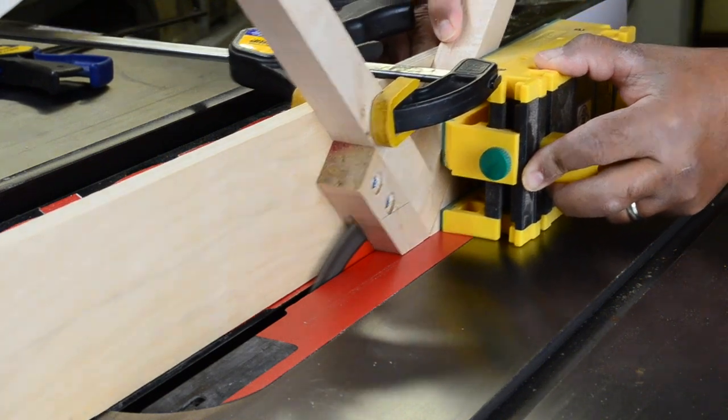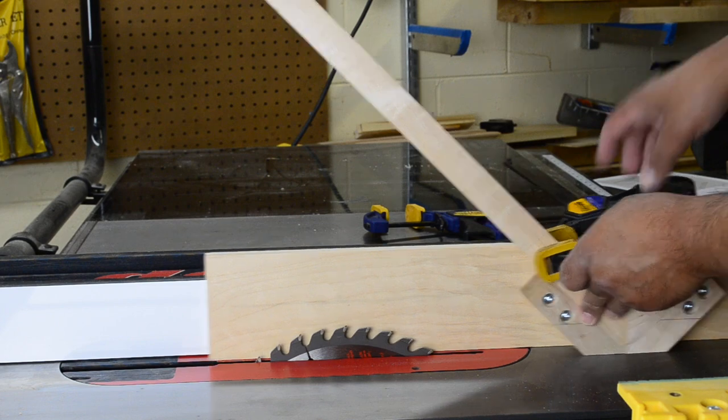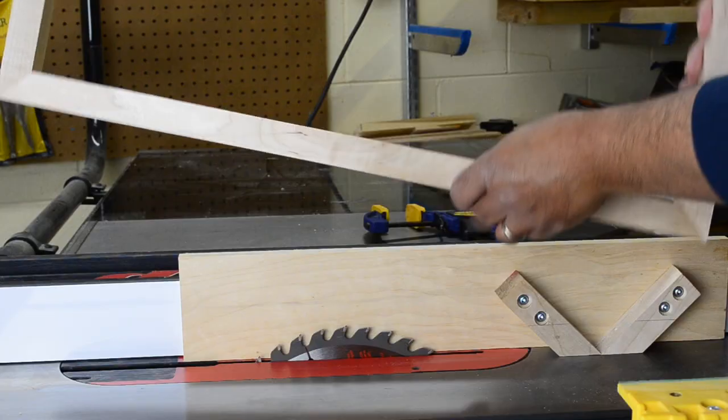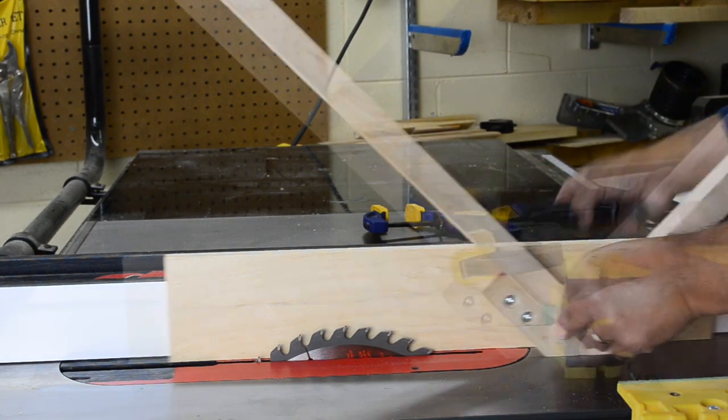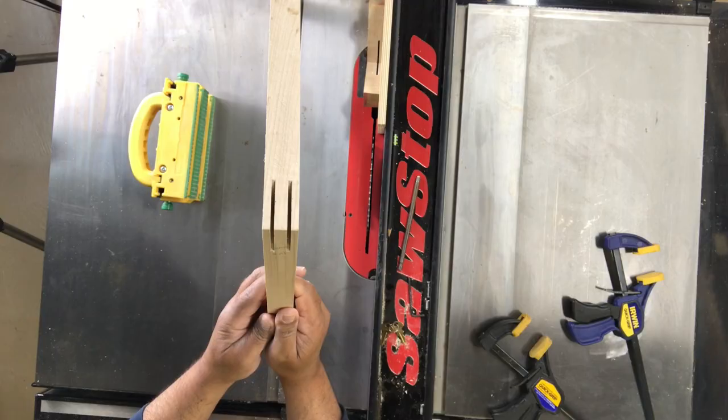With a component clamped in position, I hold it tight to the rip fence and run it across the blade. After the first cut, I turn off the saw, flip the component so I can cut a spline for the opposite side, and make my cut as before. The results are a pair of matched slots spaced equally in from both sides.